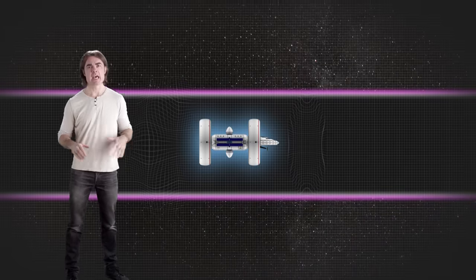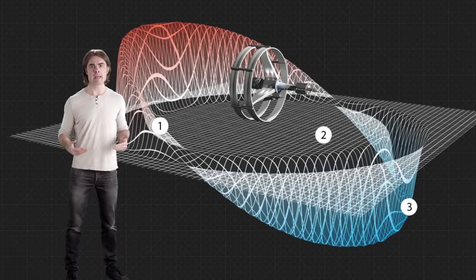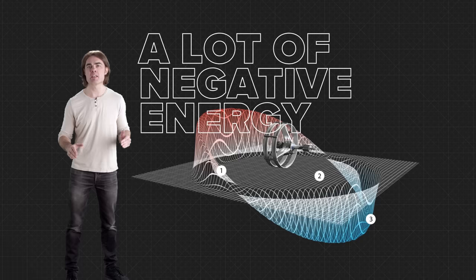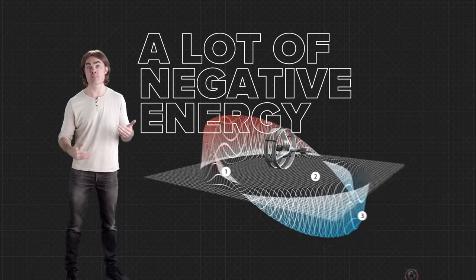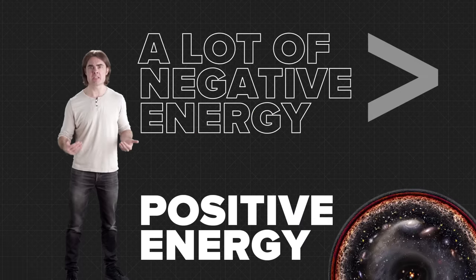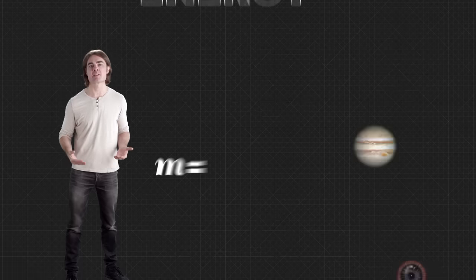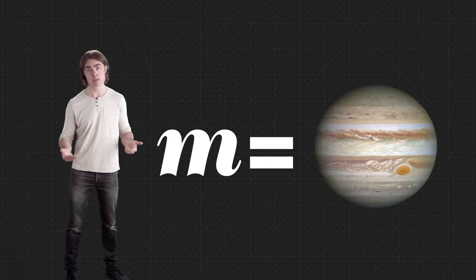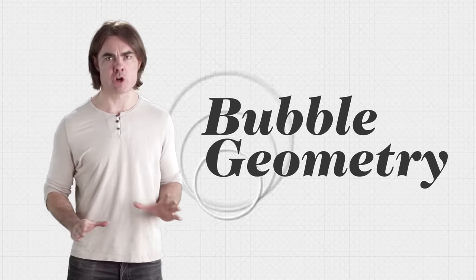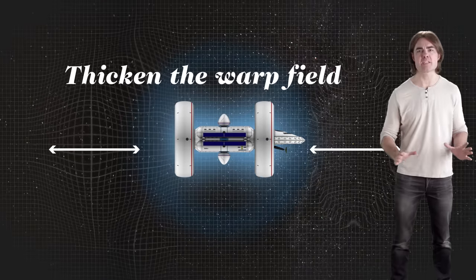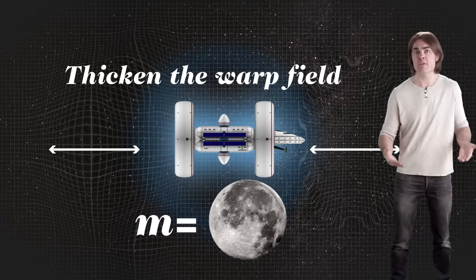Last tricky thing. As Alcubierre devised the warp bubble, he figured it would take a lot of negative energy. In fact, it would take significantly more negative energy than there is positive mass energy in the entire observable universe. Later refinements brought this down to the mass equivalent of Jupiter. Either way, not practical. Happily, recent reworkings of the bubble geometry have cut this down further. Thicken the walls of the warp field, and you get the negative mass energy requirement down to the equivalent of maybe the moon or even an asteroid.